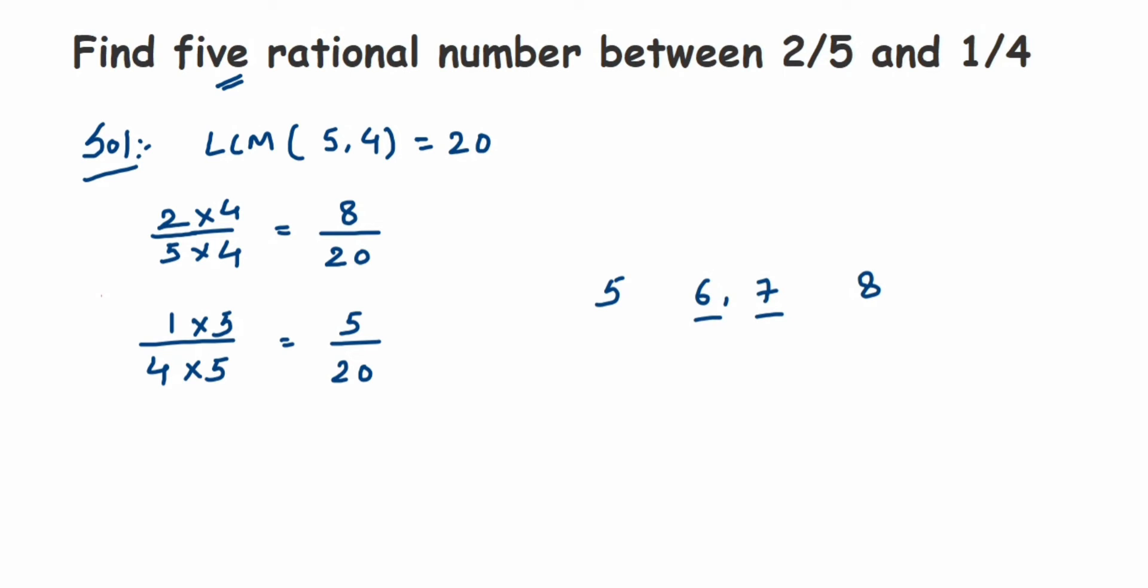Then what to do? What we're going to do is: we have already found equivalent rational numbers, right? I'm going to find one more equivalent rational number by multiplying with a certain number. You can multiply with any number. The main aim is to increase the gap between this 5 and 8.